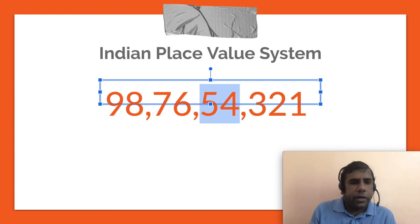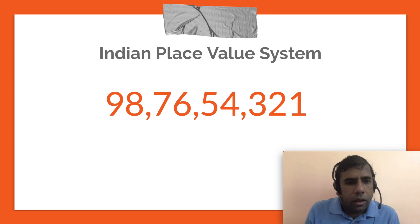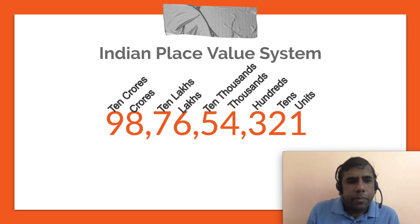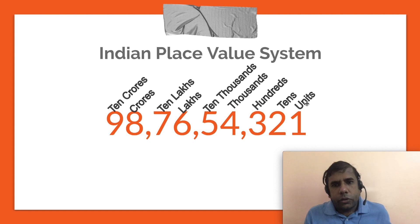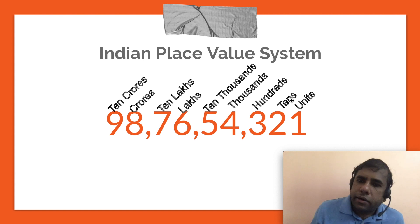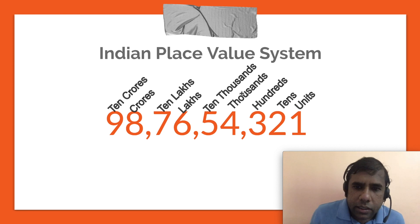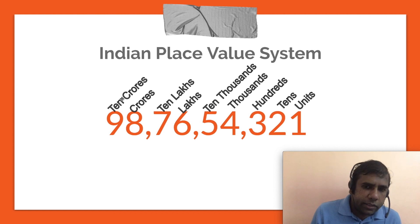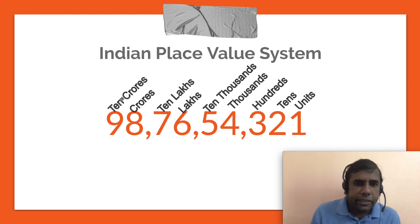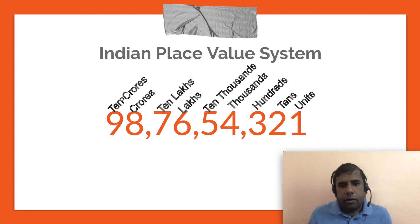Each of the places in this number, starting from the right side, are: units place, tens place, hundreds place, thousands place, ten thousands place, lakhs place, ten lakhs place, crore place, and ten crore place. This is a nine-digit number, so it goes up to ten crore.